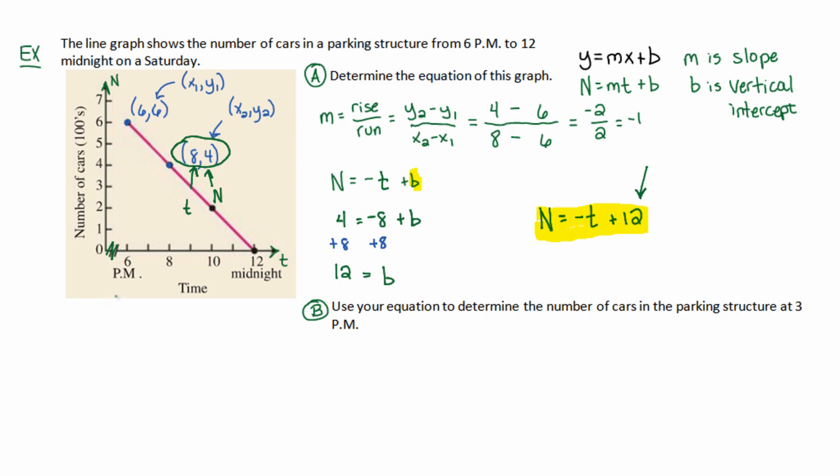Now, part b is just asking us to use the equation to predict the number of cars in the parking structure at 3 p.m. 3 p.m. is a time. So, we're going to let t equal 3. You'll get n is equal to a negative 3 plus 12. That's by letting t equal 3. And that will be 9.